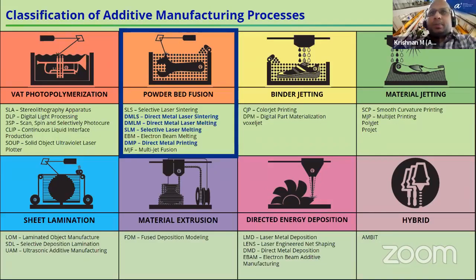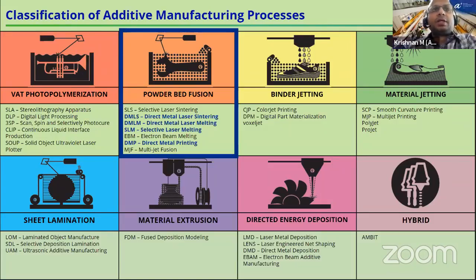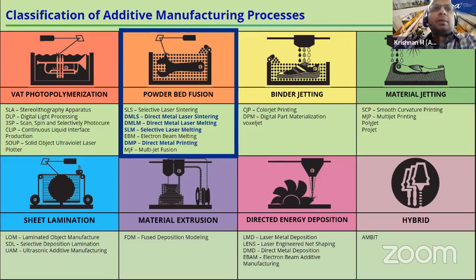This particular training is mainly focusing on metal 3D printing, specifically the laser beam powder bed process. You might have come across different terminologies or abbreviations for this process. For example, EOS calls it Direct Metal Laser Sintering (DMLS), while other OEMs use terms like DMLM, SLM, or DMP.